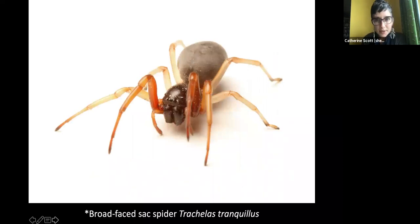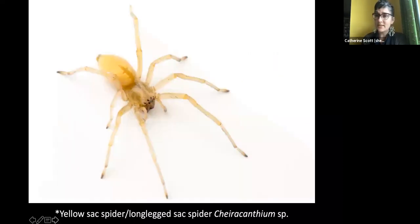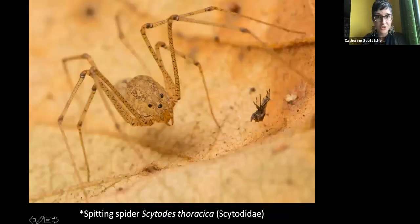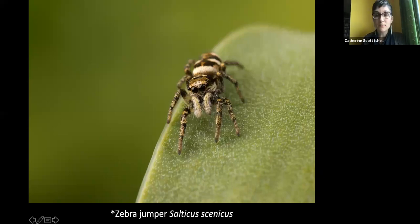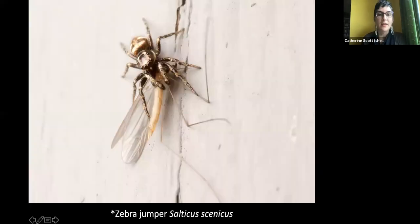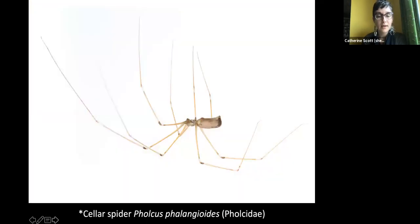Common house spiders include the broad-faced sac spider, the yellow sac spider — which has an undeserved bad reputation — the spitting spider, which really likes houses, and zebra jumpers, which are very common on the outside of houses on sunny days, often seen on rock walls or white siding. Cellar spiders, as their name suggests, are also common in homes.